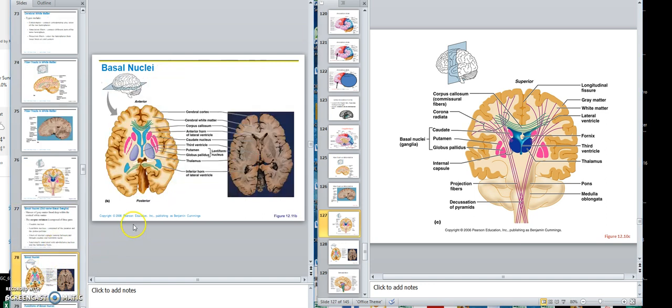So here again, the basal, looking at it this way. See, that's the lentiform, putamen and globus pallidus. That's the caudate. This is the ventricle right here. Those are the lateral ventricles, and that's the third right there.